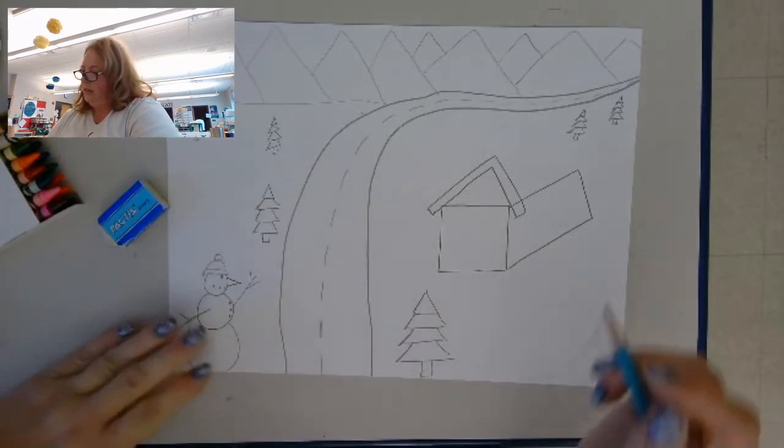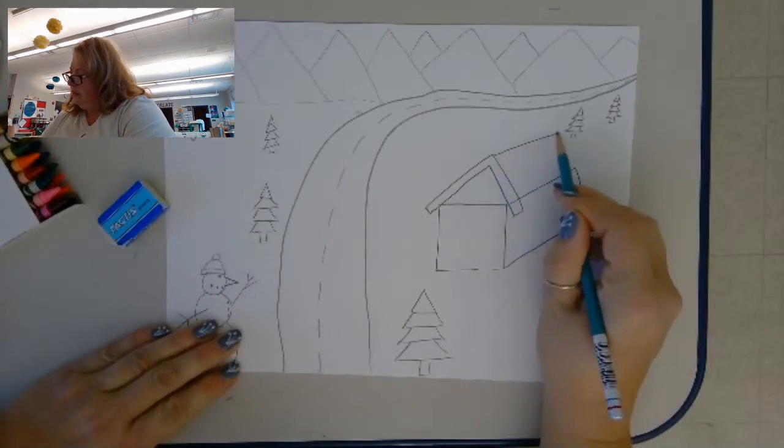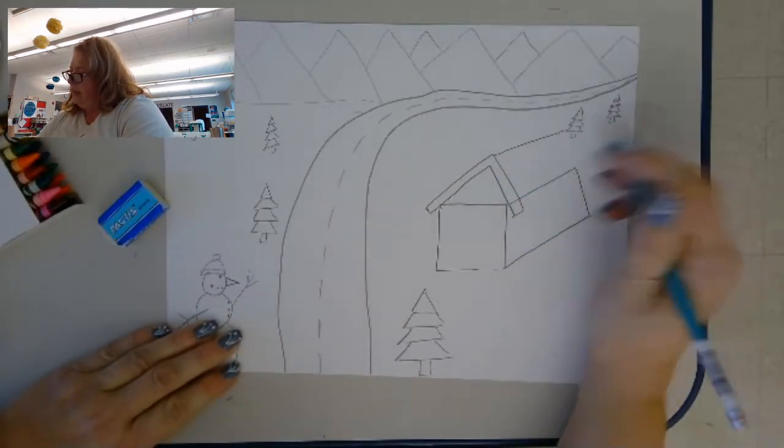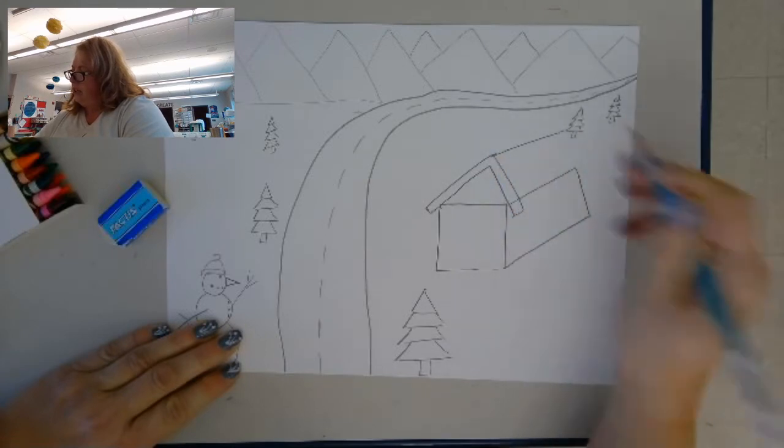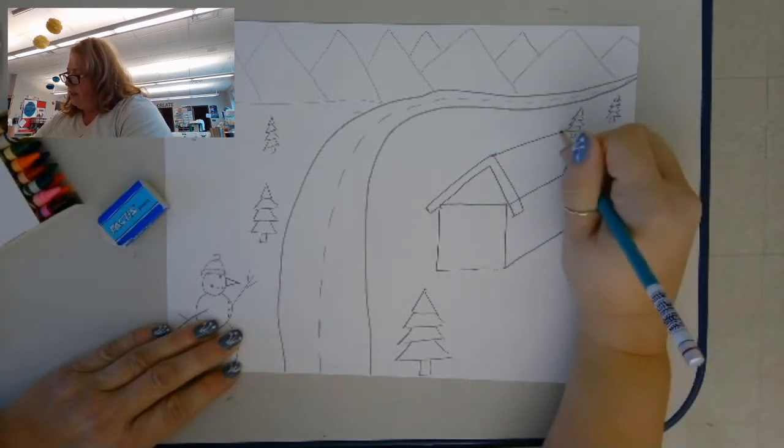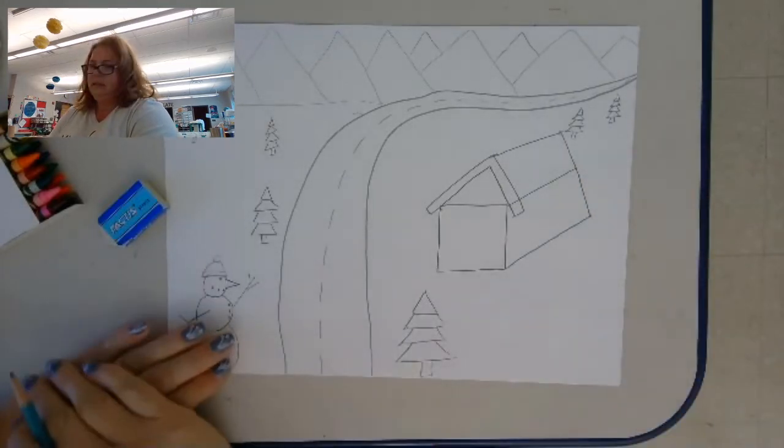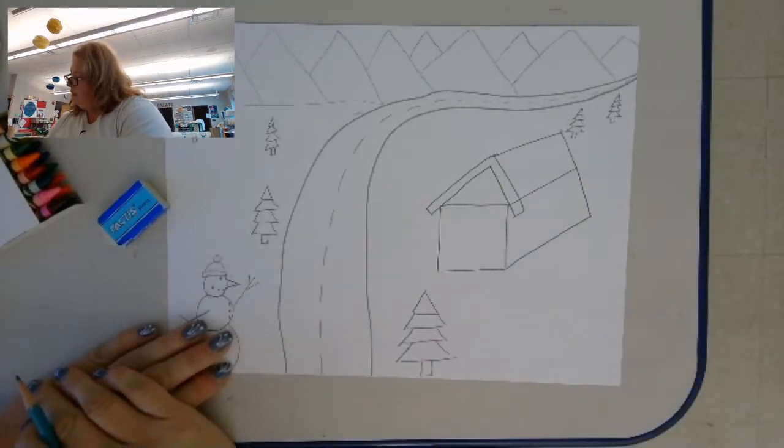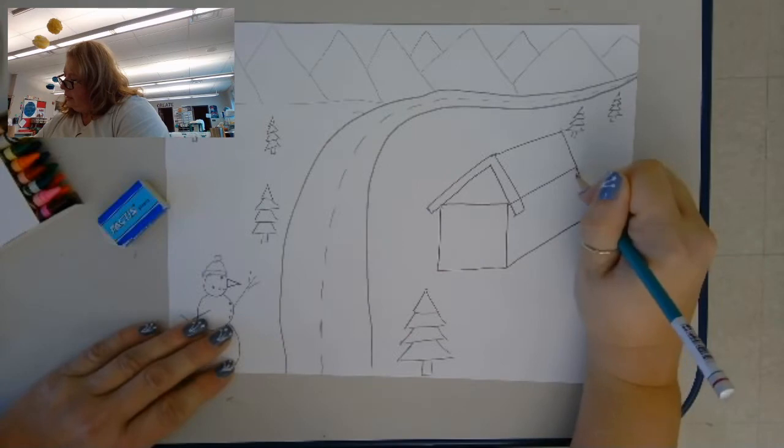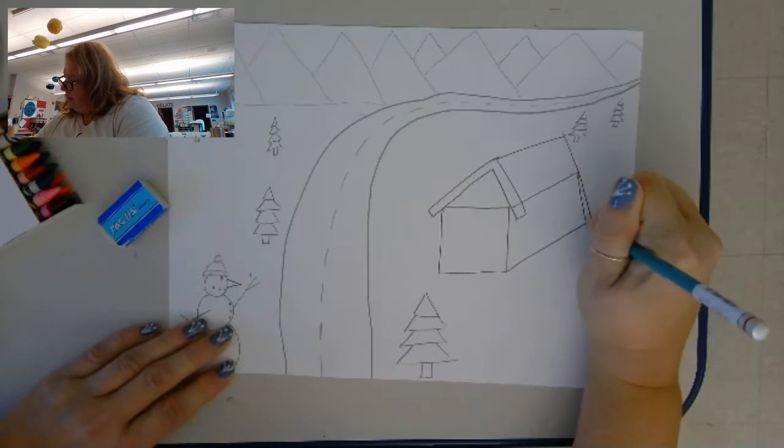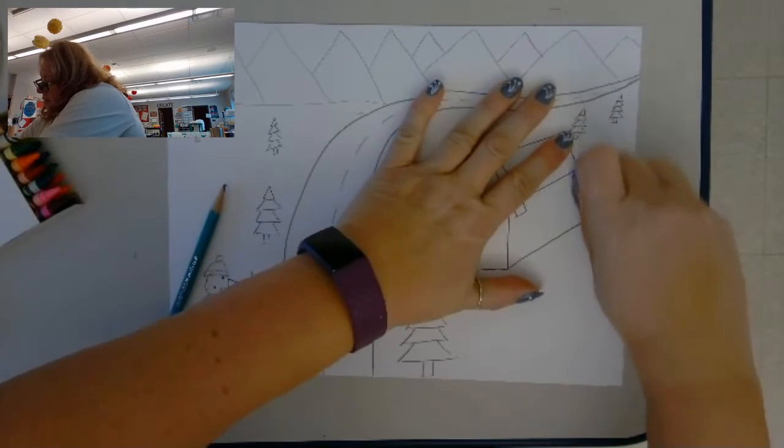Then I'm going to draw a line back from the point of the triangle shape, and then down. And I might fix this line here.